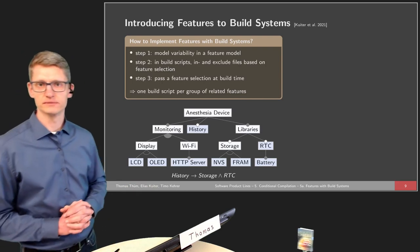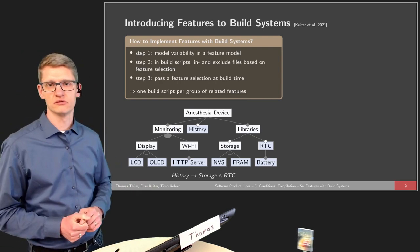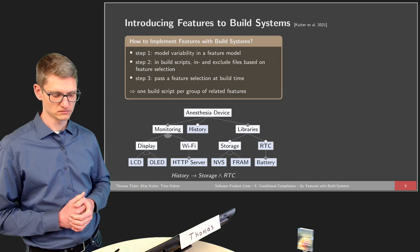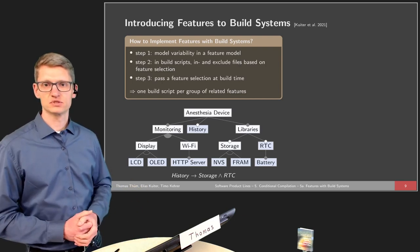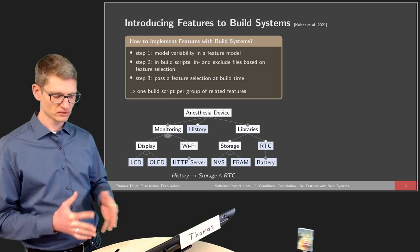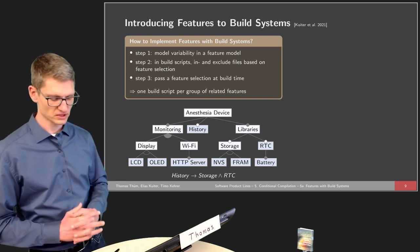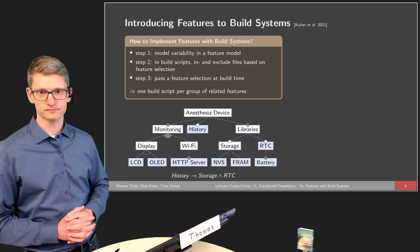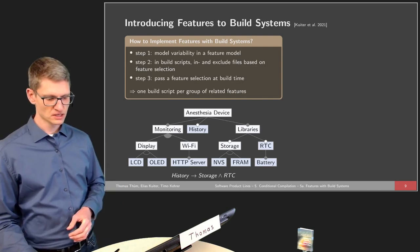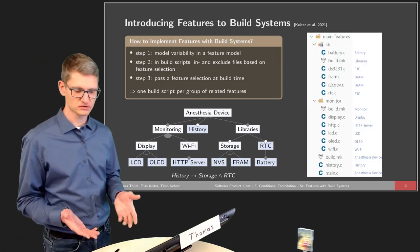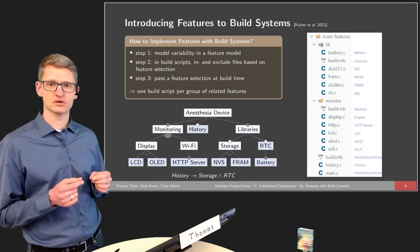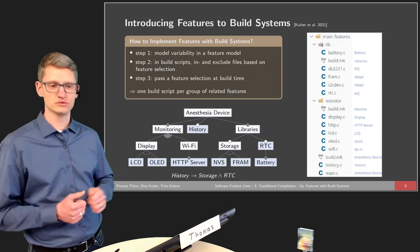So how can we use build systems for features? First, we model the variability of the product line in terms of a feature model. In this example, there are certain features available: two different kinds of displays, Wi-Fi always present, always an HTTP server, and different kinds of storage. What we do now is create build scripts — not a separate build script for every variant of the system, but a single build script that contains those feature variables and makes use of them.